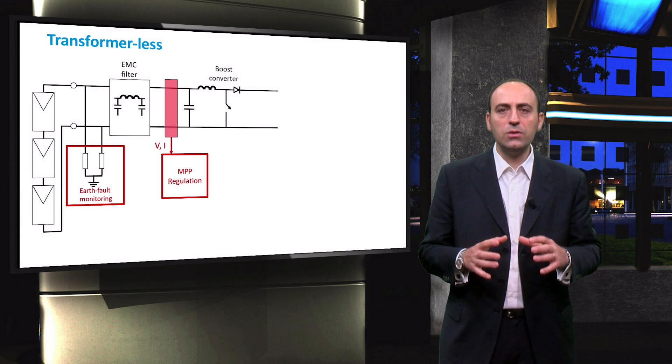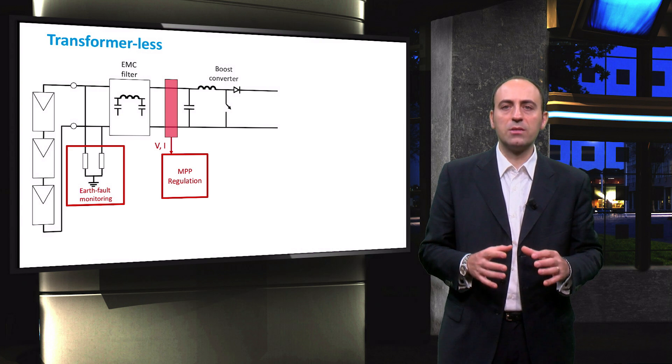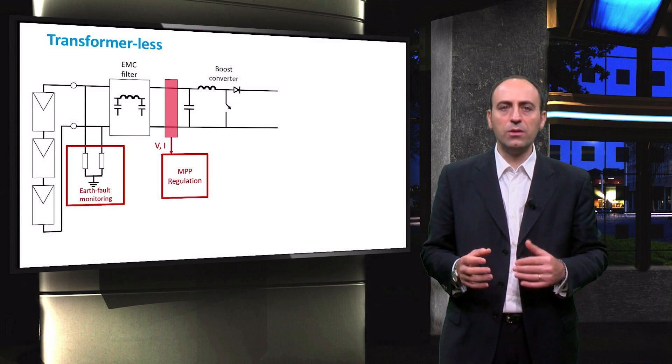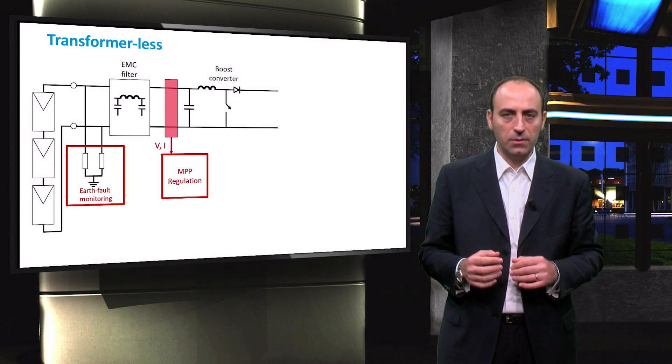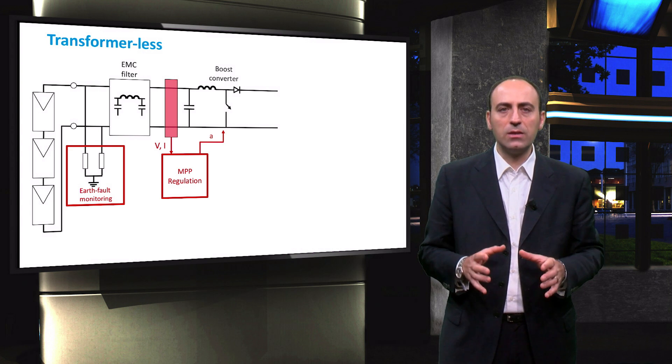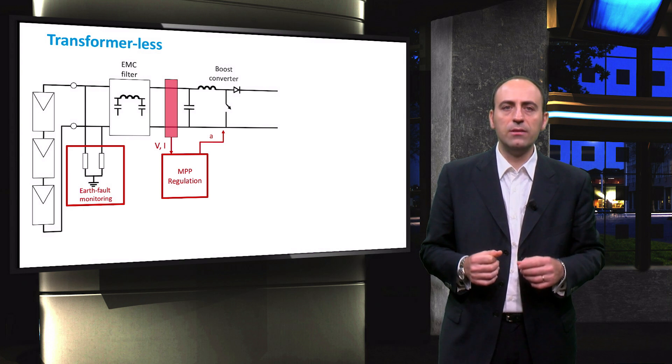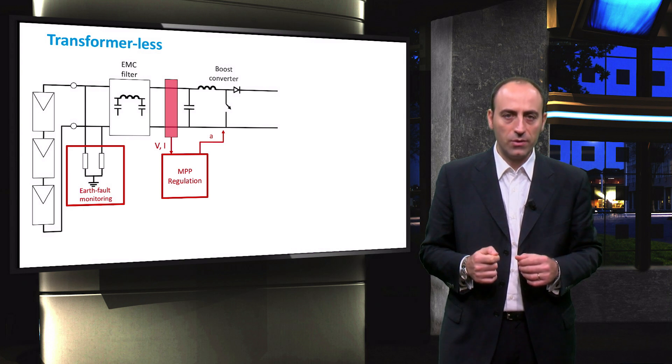The boost converter is used to step up the voltage at the DC side. The boost converter is used because the DC voltage must be around 370 volts in order to supply the grid with 230 volts in AC.